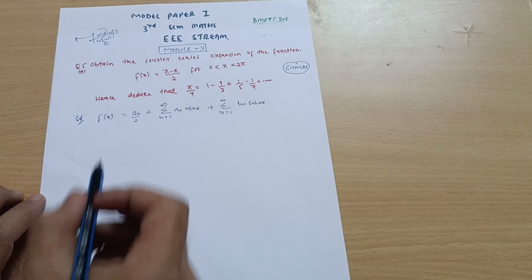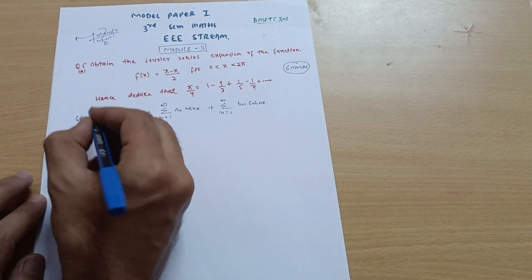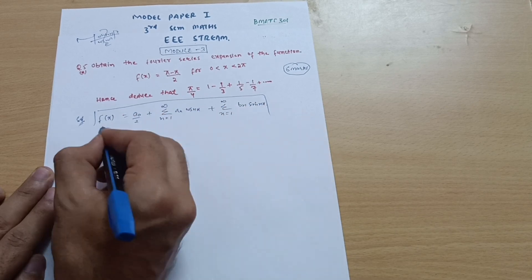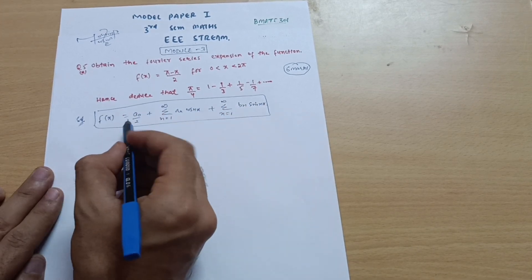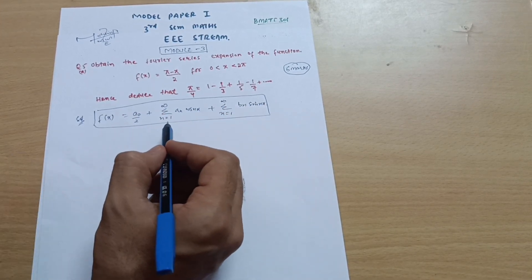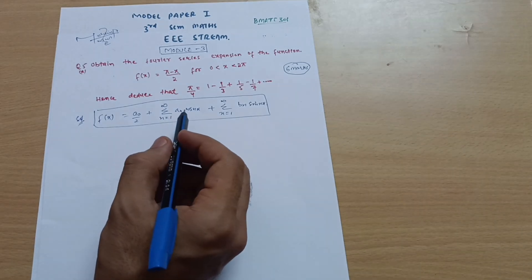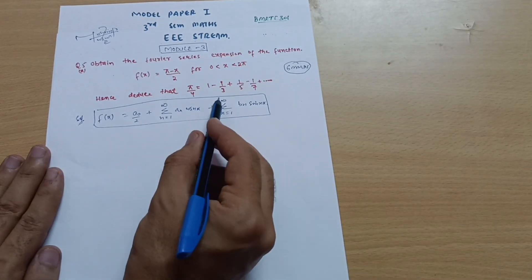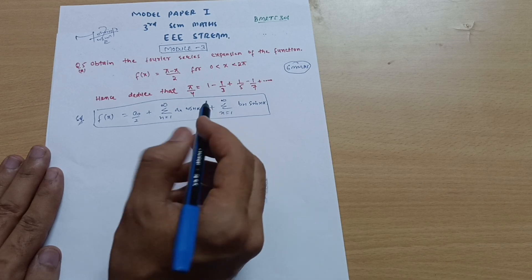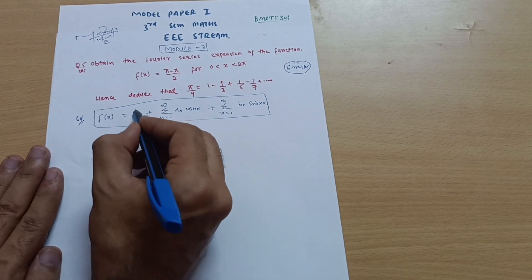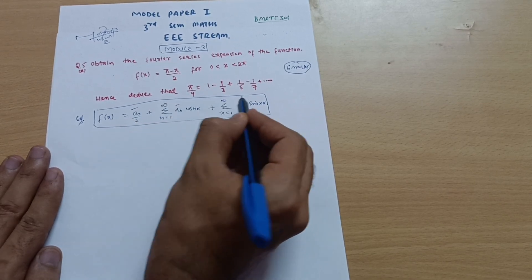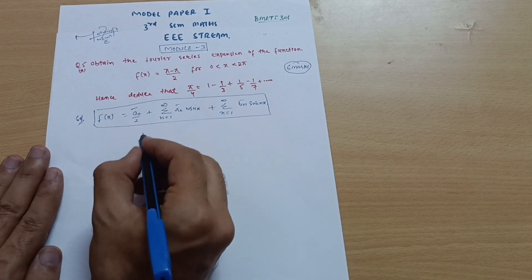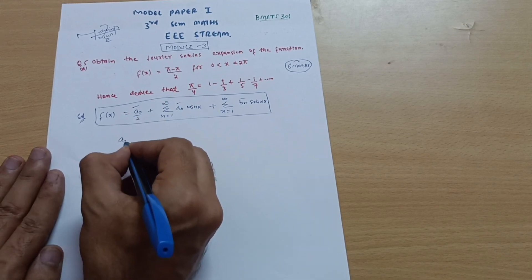While writing the solution, always remember the Fourier series expansion: f(x) = a₀/2 + Σ aₙ cos(nx) + Σ bₙ sin(nx), where a₀, aₙ, and bₙ are the Fourier coefficients which we have to calculate in this particular problem.